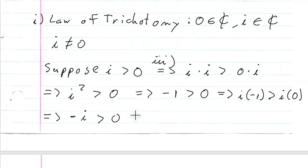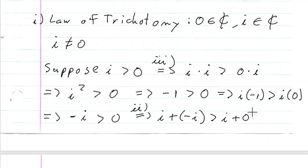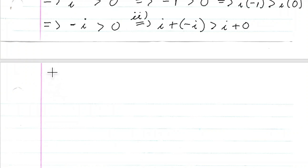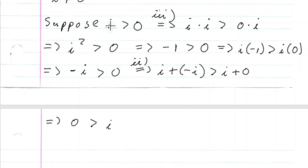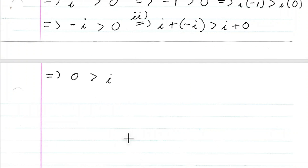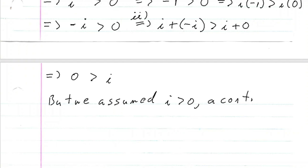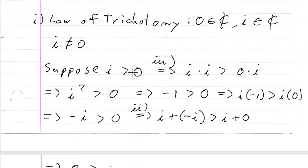From the second axiom, i plus negative i is bigger than i plus zero. Since any complex number plus its additive inverse gives zero, this gives zero is bigger than i. But we assumed i was bigger than zero — that is a contradiction. So i is not bigger than zero.